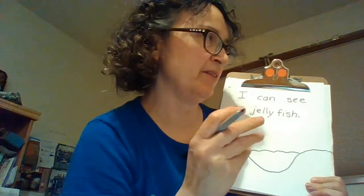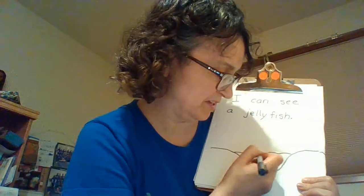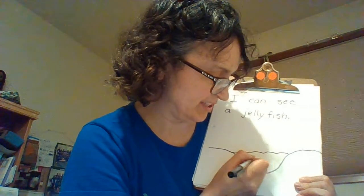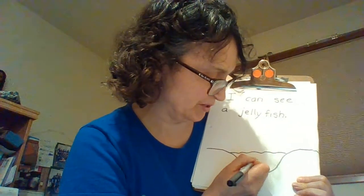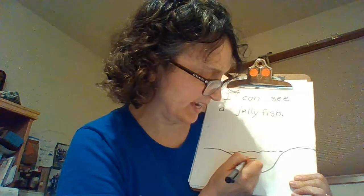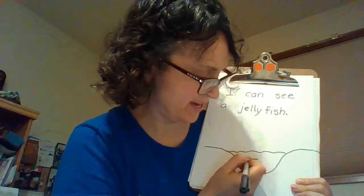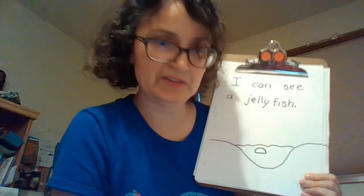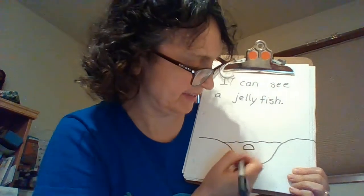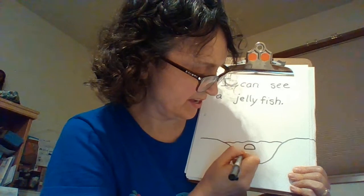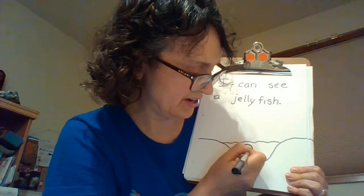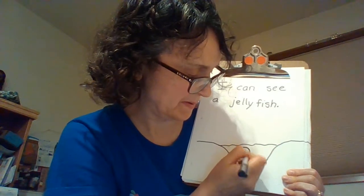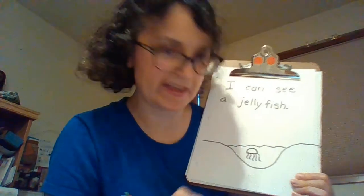Now we're going to draw a jellyfish starting with the bell. The bell is the top of the animal and it looks like half of a circle. I'm going to draw a line like that and then draw half of a circle up on top like that, and then the tentacles are going to come out of the bell like that in the water.